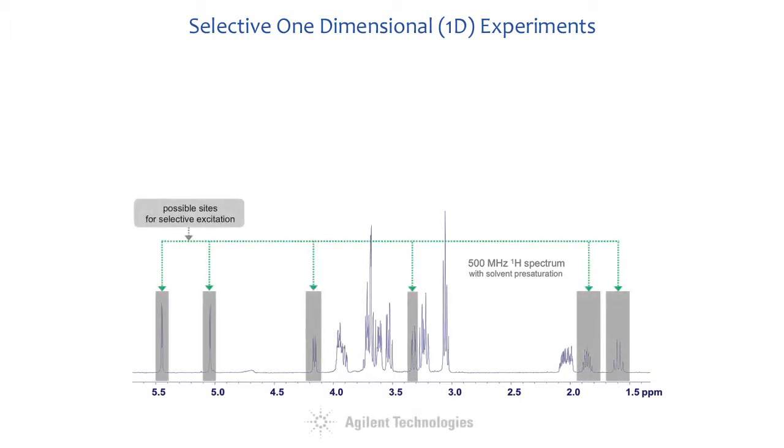The position and the optimum bandwidth of the selected pulses, however, need to be individually matched for each target signal in the proton spectrum of every sample. Therefore, these powerful experiments can only belong to the routine repertoire of an NMR lab if their setup is quick, straightforward, does not require extra calibration steps, and can be run by operators with little NMR or instrumental background.